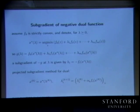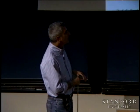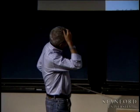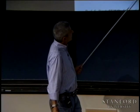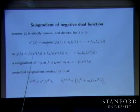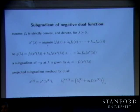Here's the projected subgradient method for the dual — notice how embarrassingly simple it is. It says: start with some lambdas (you could start with all zeros), and at your current lambda, minimize this Lagrangian without any consideration of feasibility for the primal problem.